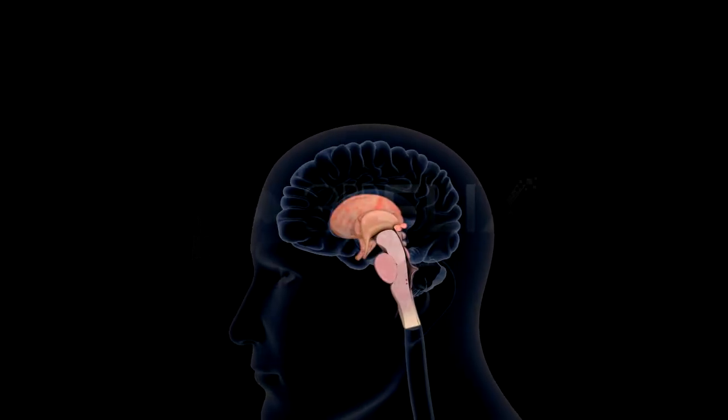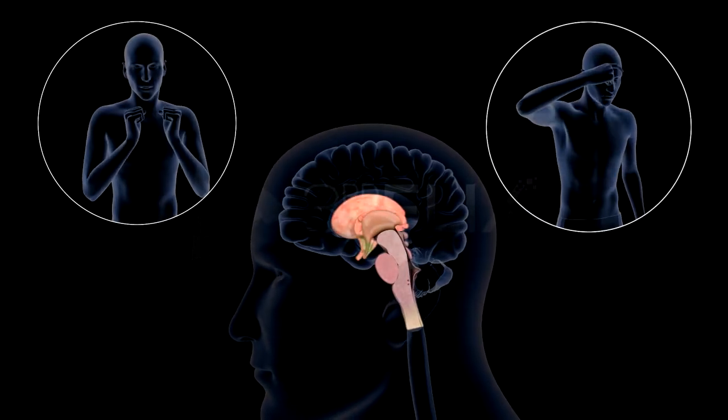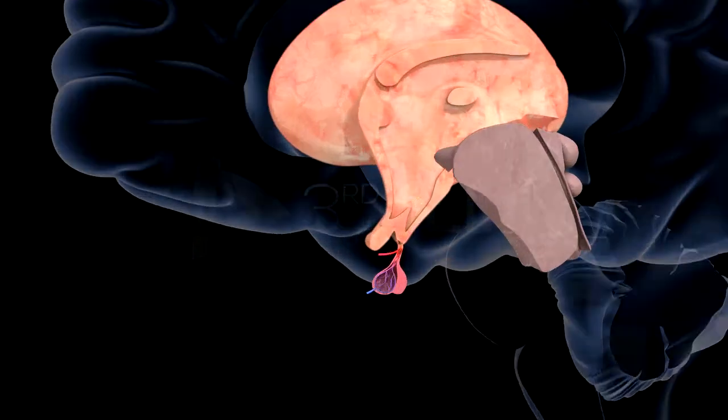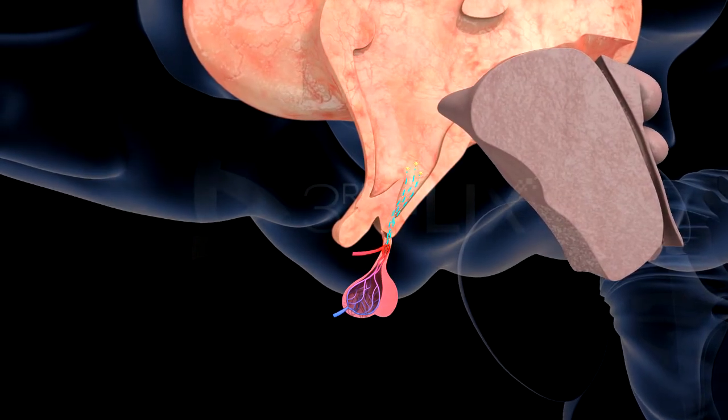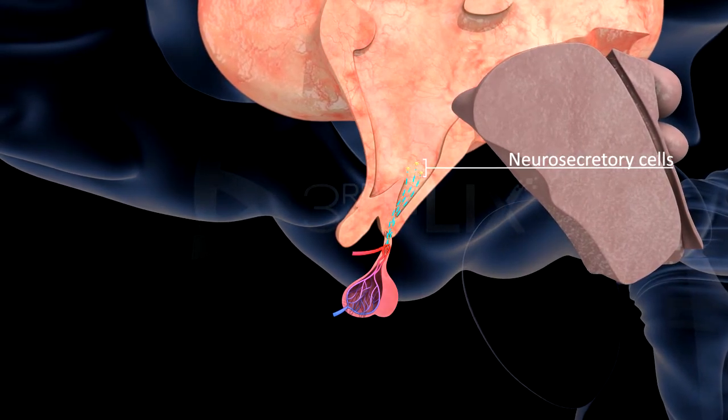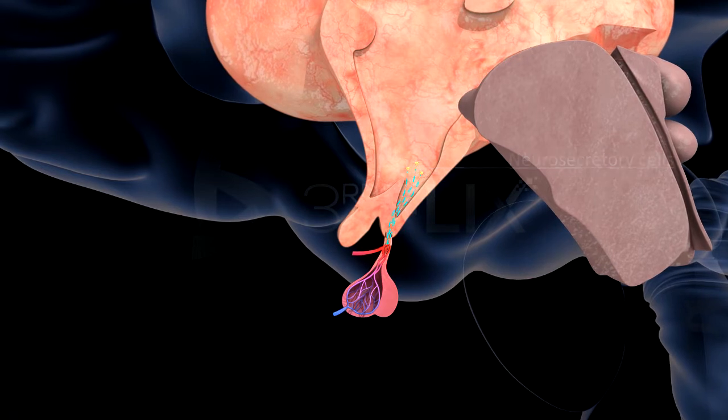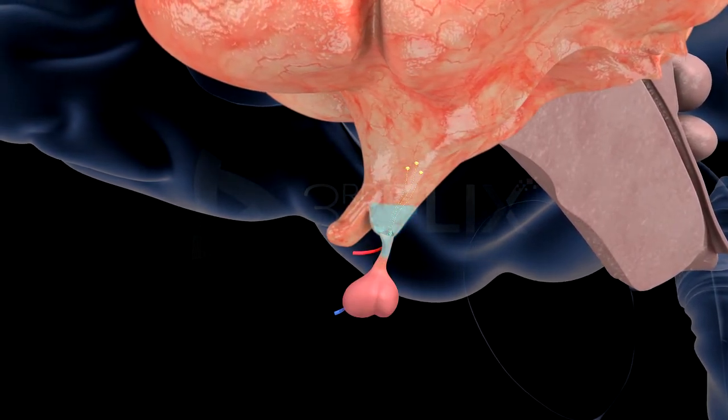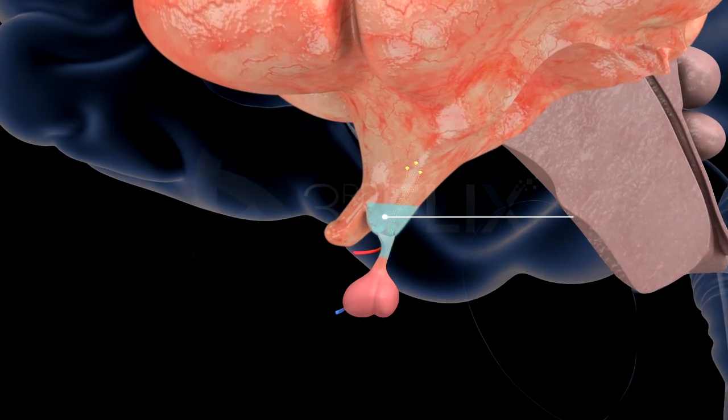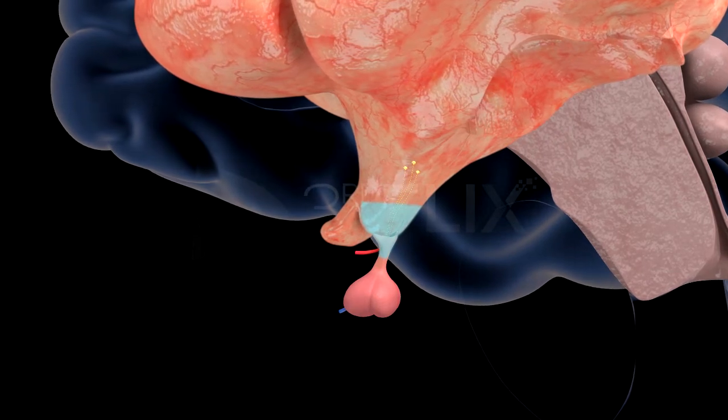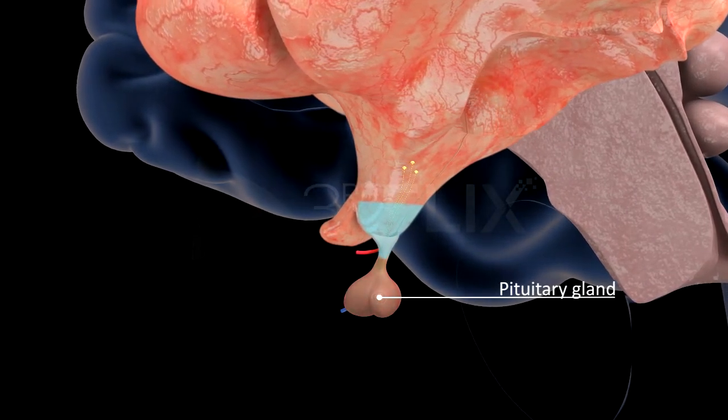It is referred to as the thermostat of the body, as it regulates body temperature. The hypothalamus also consists of a number of neurosecretory cells that secrete hypothalamic hormones. The hypothalamus forms a funnel-shaped downward extension called the infundibulum. This structure connects the hypothalamus with the pituitary gland.